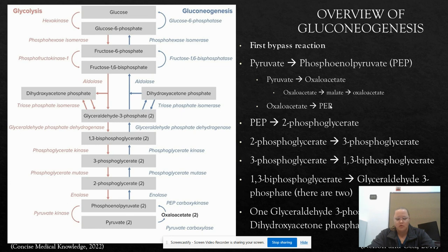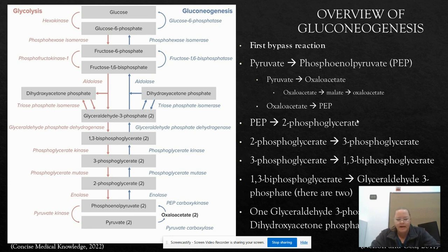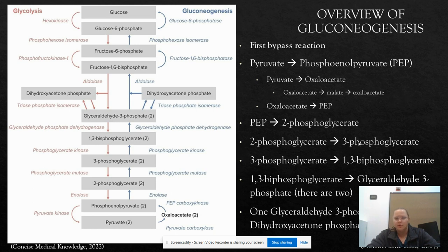Now we can use oxaloacetate and convert it to phosphoenolpyruvate using phosphoenolpyruvate carboxykinase, or PEP carboxykinase. Now we have our two molecules of phosphoenolpyruvate, and we're going to use enolase again — the reverse reaction from glycolysis — to create 2-phosphoglycerate. PEP is hydrated into 2-phosphoglycerate using the enzyme enolase, and then that phosphoryl group is transferred from carbon 2 to carbon 3, creating two molecules of 3-phosphoglycerate.